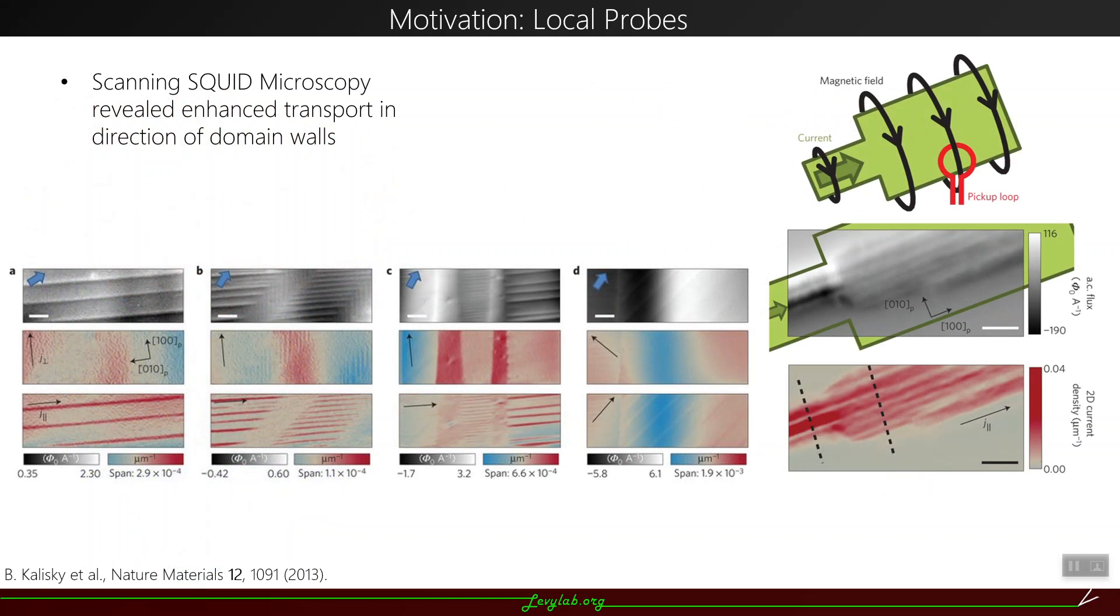I also want to talk really quickly about a technique called local probes. Local probes are essentially taking measurements of some property as a function of position. In this case, Kalisky et al. was able to show enhanced transport in the direction of tetragonal domain walls, which form at 105 Kelvin when strontium titanate undergoes a cubic to tetragonal transition. They basically cycle the temperature above 105 Kelvin and then back down again to reform domain walls in different orientations to show that this happens every time.